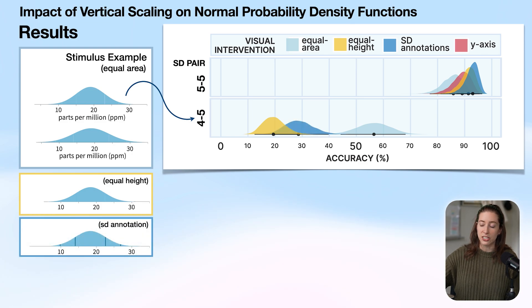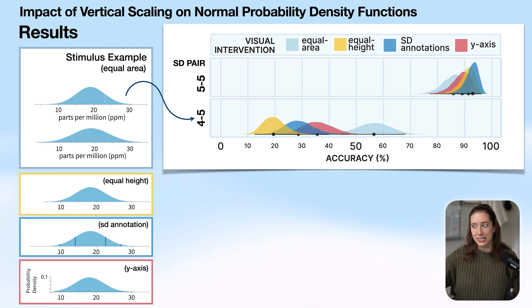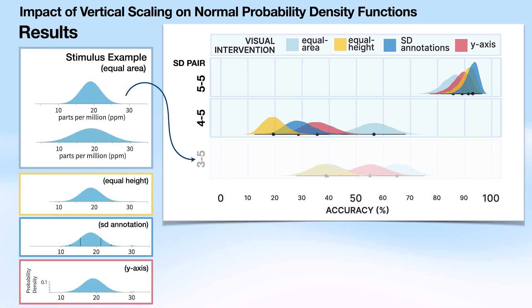When we add in those standard deviation annotations, accuracy gets a little bit better, and a y-axis accuracy gets a little bit better, but not so much as to be on par with an equal area PDF comparison.